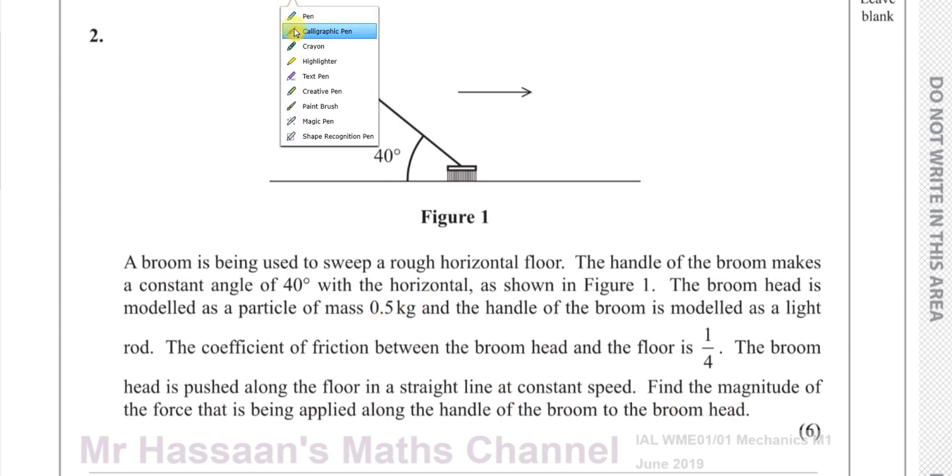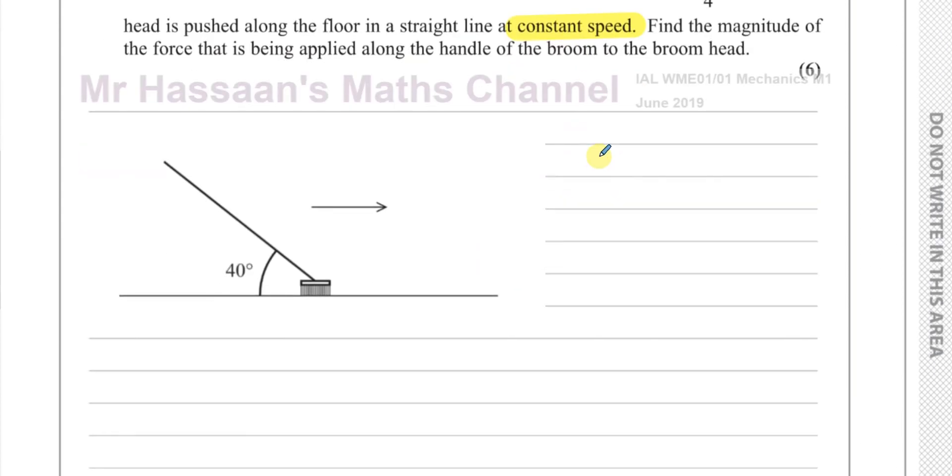So there's a few important points here. We have a rough floor, so we're going to deal with friction. And the other thing that's very important is that it says it's going at constant speed, so the acceleration is zero. Those are very important in this question for us to understand how to deal with this question. So here I've got a copy of the diagram, so I can draw stuff on it.